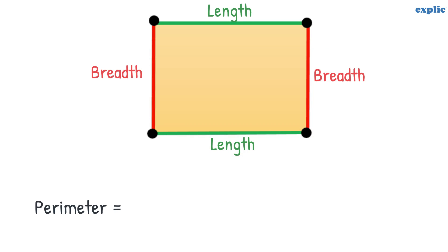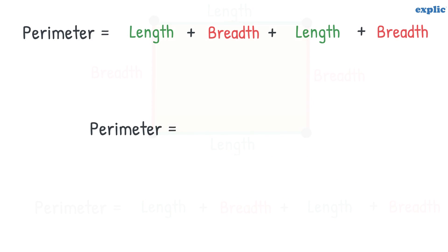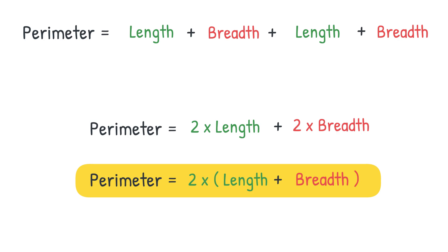Therefore, the perimeter of the rectangle would be length plus breadth plus length plus breadth. To simplify the calculation, write length plus length as 2 multiplied by length. Similarly, write breadth plus breadth as 2 multiplied by breadth. It can also be written as 2 into length plus breadth. This formula can be used directly to calculate the perimeter of the rectangle.